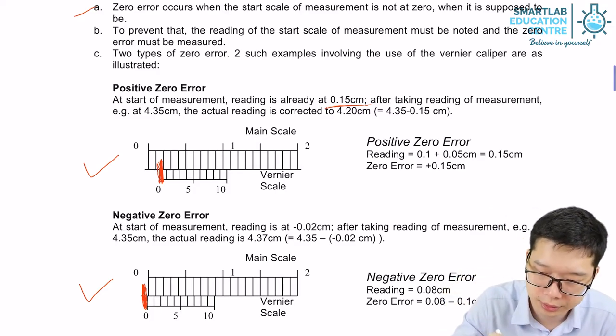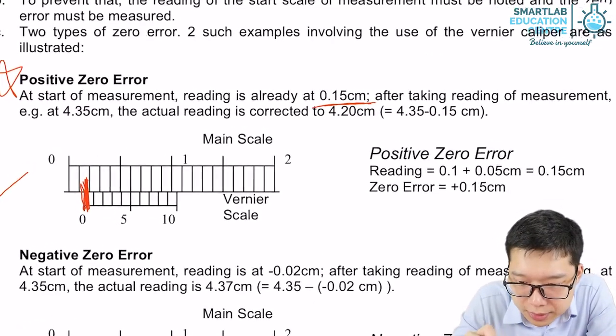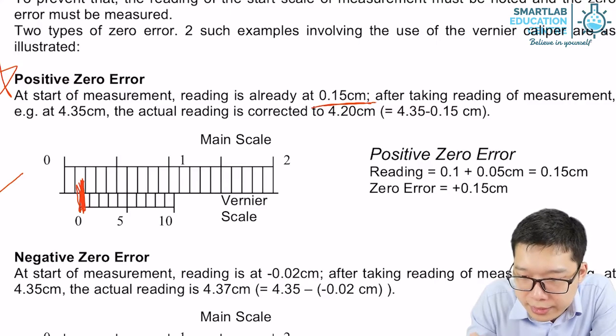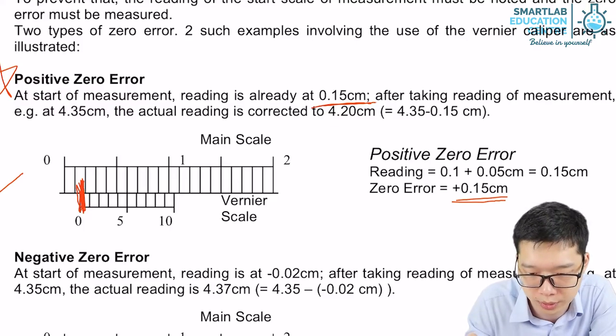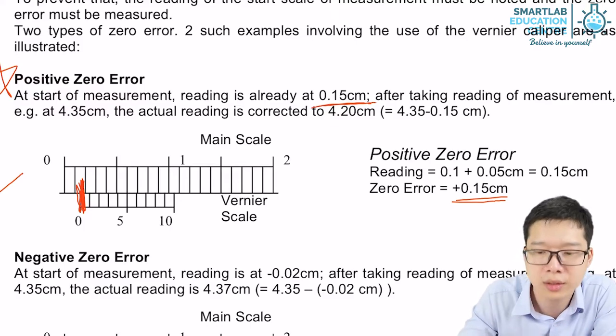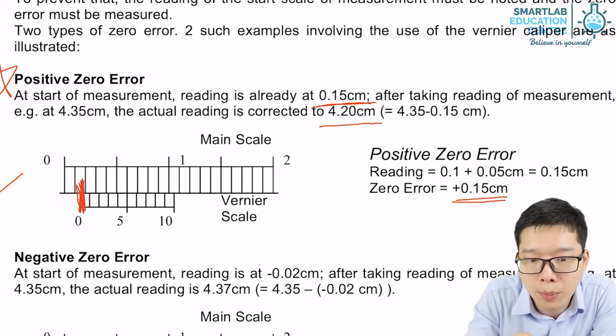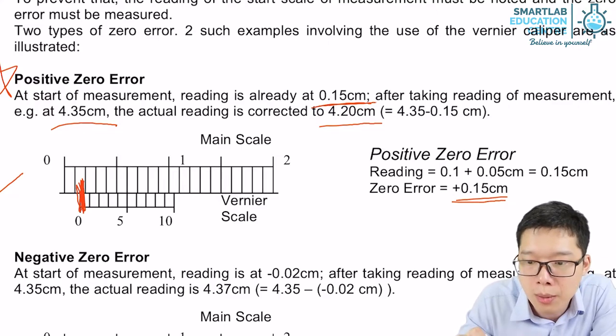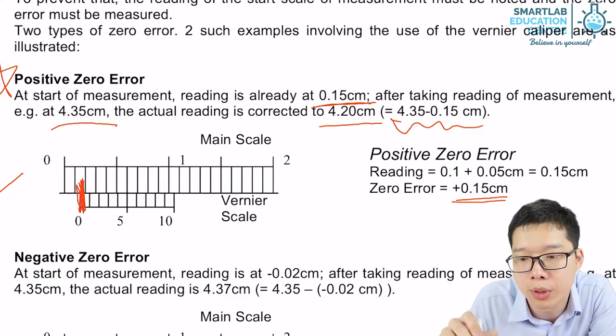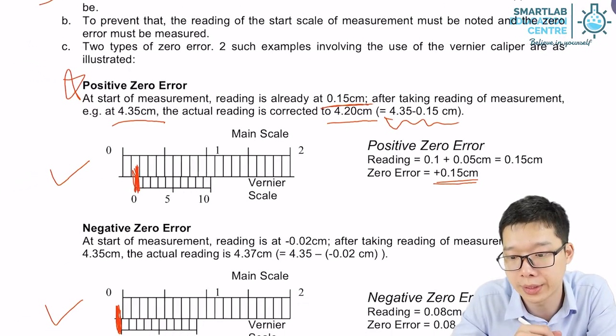So let's look at the notes one more time. For positive zero error, let's look at the graph over here. Without putting anything, we have already gotten a plus 0.15 cm zero error. So later on, no matter what we have, for example, if our final reading is 4.35 cm, we need to use 4.35 minus away the positive 0.15 and 4.20 is our final answer.